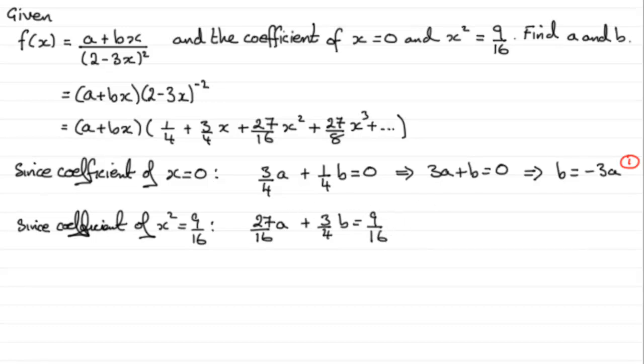I'll divide through by 3, giving 9/16a + 1/4b = 3/16. Then multiplying through by 16, we get 9a + 4b = 3. That's our second equation.